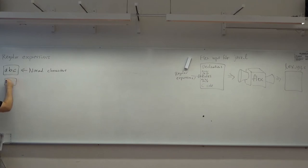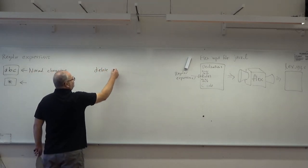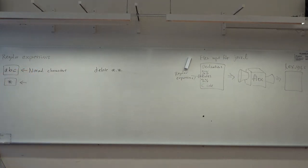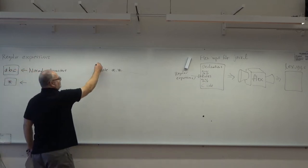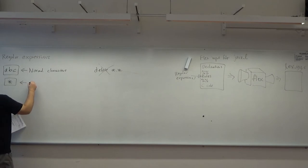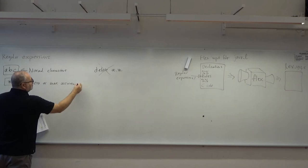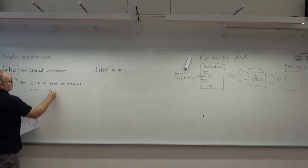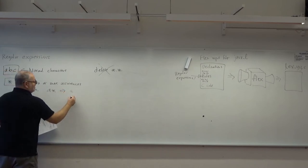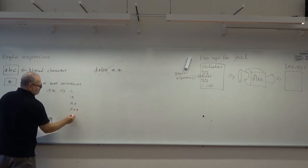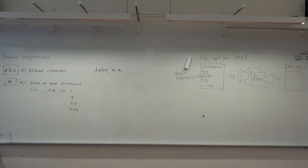You also have the star. It's not like in some shells and the command prompt where a star means any sequence of characters. This is what is called a Kleene star. What it means is zero or more occurrences of the previous thing. So, A star can be either empty, or one A, two A's, three A's, and so on. You can use parentheses to group things together.